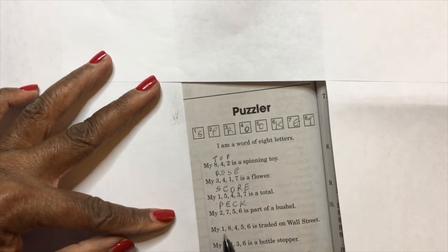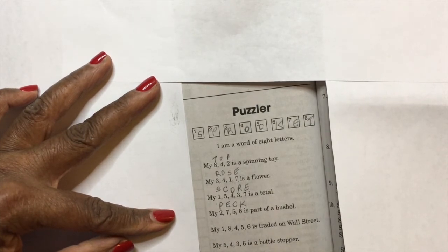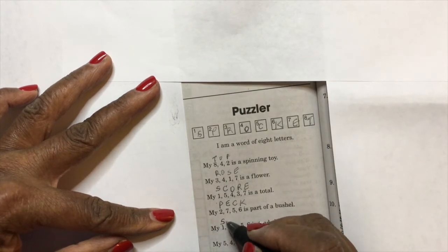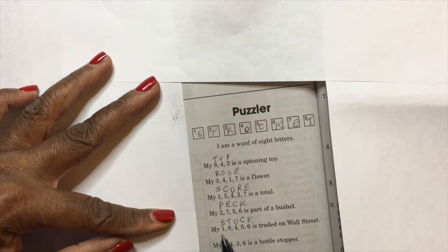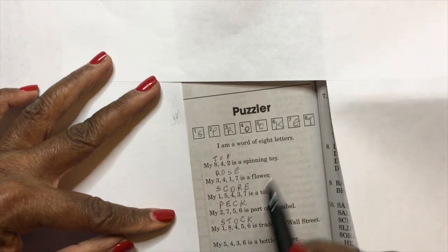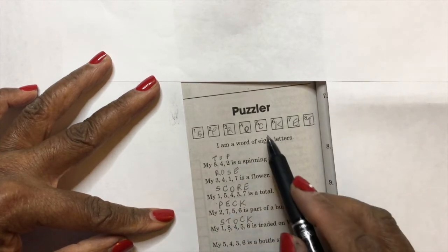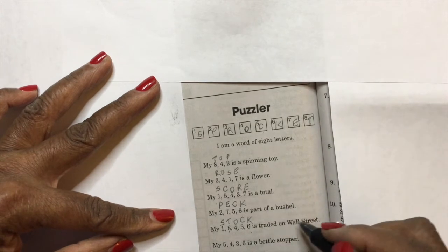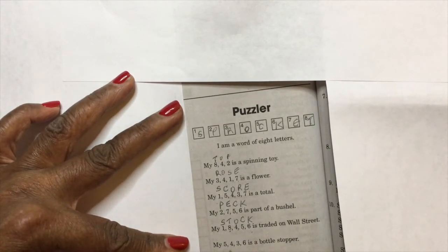sprocket until we solve the whole puzzle. 'My one, my eight, my four, my five, my six is traded on Wall Street.' Well, what's traded on Wall Street? Stock. So I would say S-T-O-C-K. So let's check: number one would be an S, number eight would be a T—that's correct. Number four would be an O, number five a C, number six a K. Okay, that's correct. Next clue: 'my five,